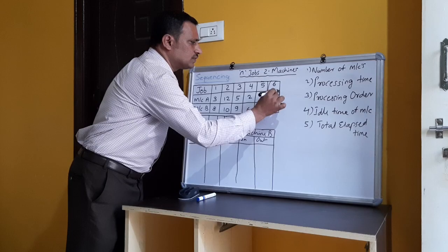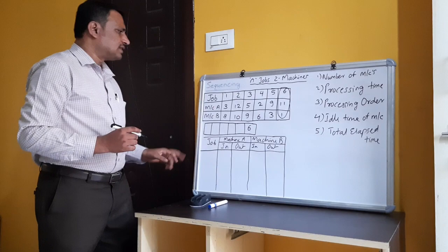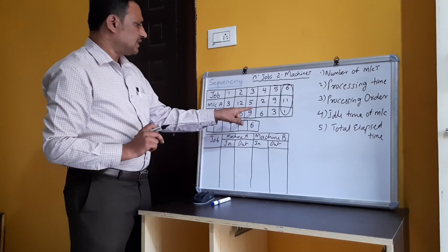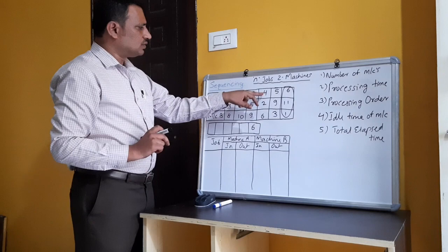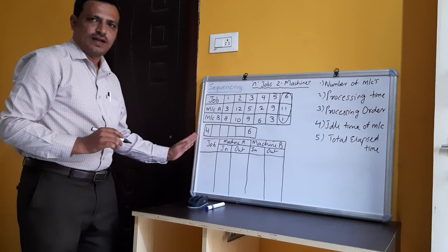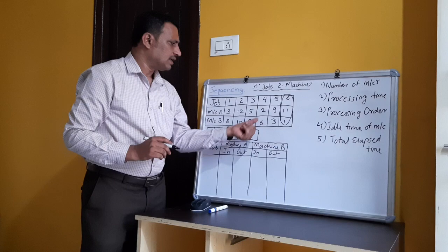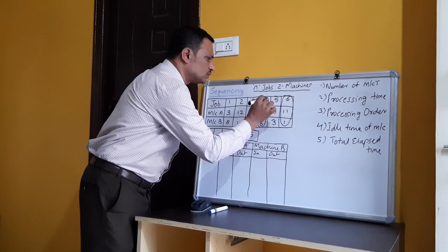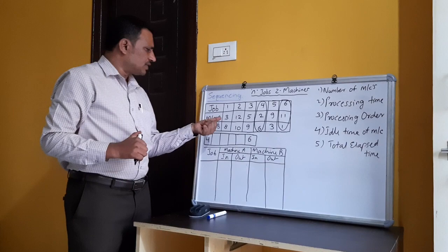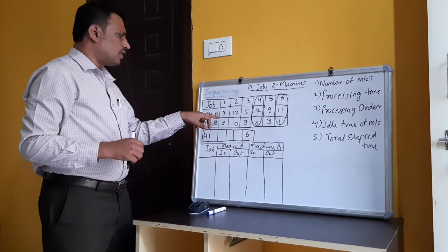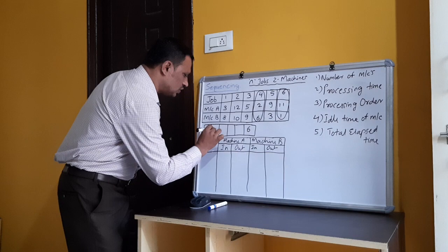Next, from the remaining jobs, the least processing time is 2, which is on machine A for job four. Hence we place job four at the left end of the sequence. The next least processing time is 3 — and here both machine A (job one) and machine B (job five) have a processing time of 3. When there is a tie, we can select either machine.